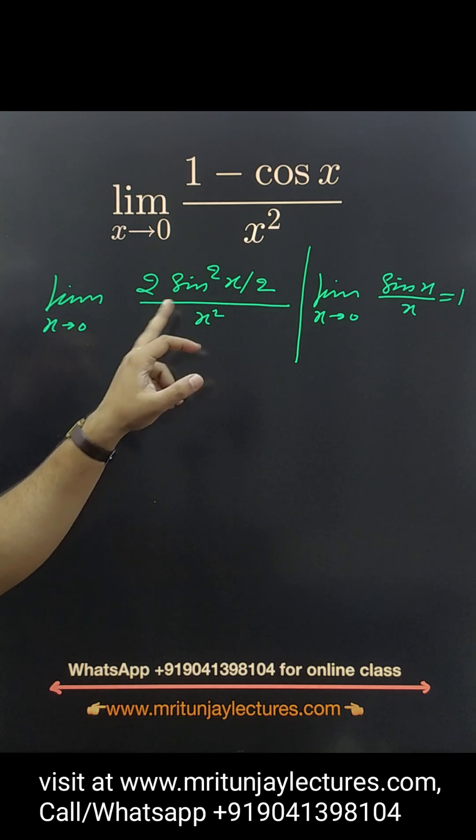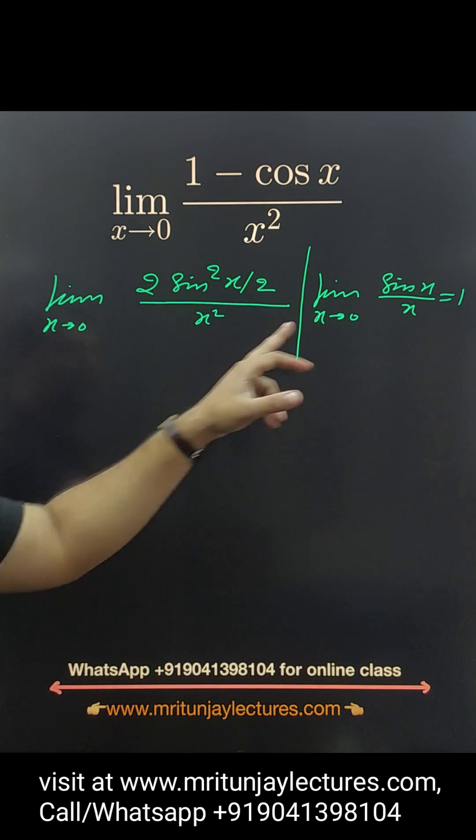So if you want to make it like that, simply multiply by 4 and divide by 4. Then we got x tends to 0, here 2 sin x by 2, divided by x by 2 to the whole square, divided by 1 by 4.